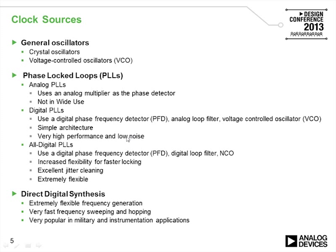If you take all the elements of a phase locked loop and implement them using digital blocks, then you have what we call an all-digital PLL. The all-digital PLL uses a digital PFD, a digital loop filter, and a numerically controlled oscillator instead of a VCO. It has some increased flexibility for faster locking and very good jitter cleaning. The jitter cleaning of a regular digital PLL is also very good.